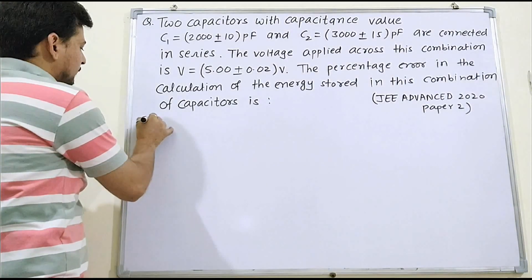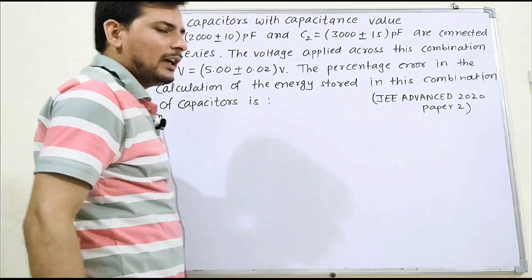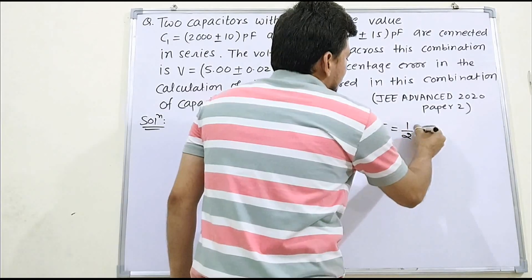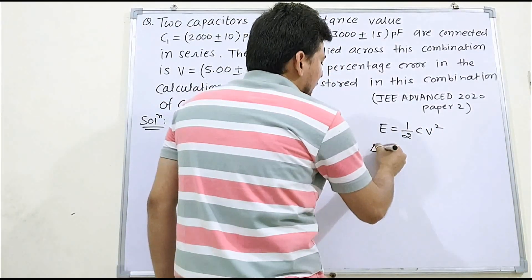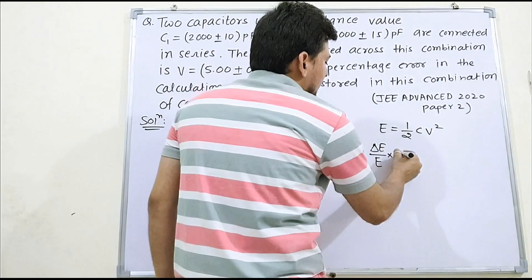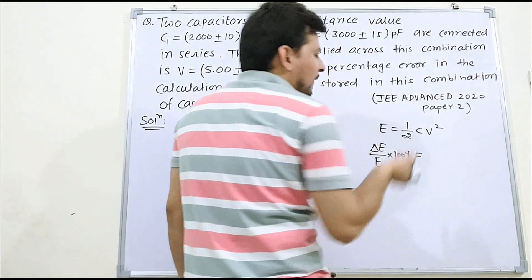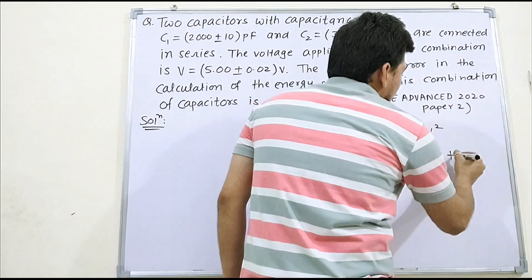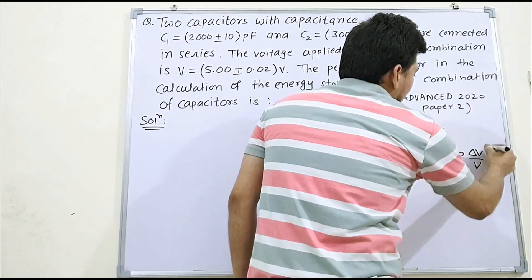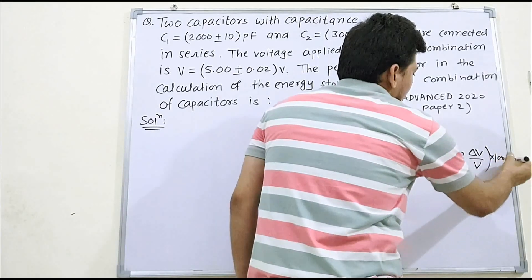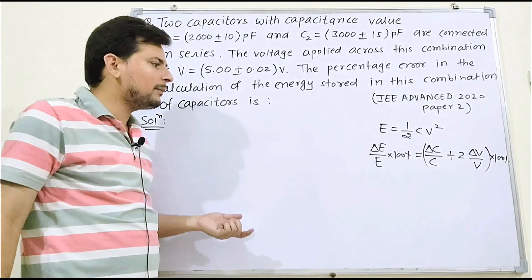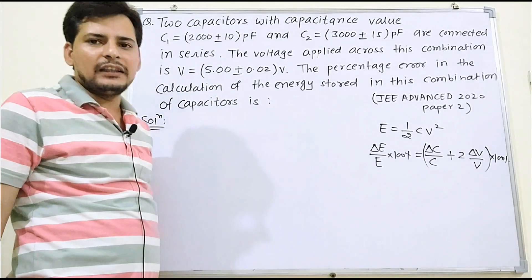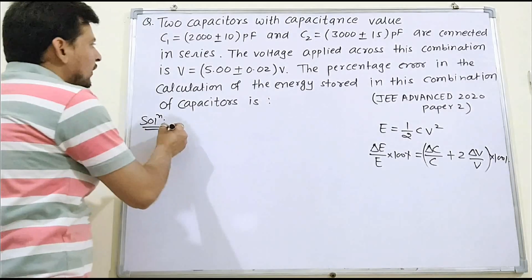Now let's work this out. We have all the values. So δE/E × 100% — since half is constant — becomes δC/C + 2·δV/V, multiplied by 100%. So we need to find δC/C and δV/V. Now since we have two capacitors in series, we need to find δC_equivalent/C_equivalent.